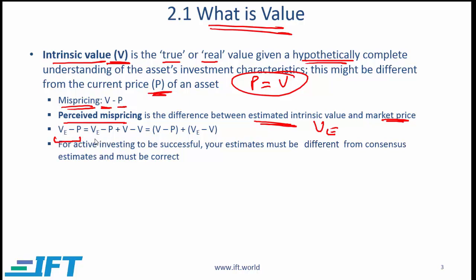If we do a little bit of algebra, we can see that this is equal to the same thing plus V minus V. This expression can be divided into two components: V minus P and VE minus V. This tells us that the perceived mispricing has two components — one is the actual mispricing, which we cannot be completely sure about, and the other is the difference between the value we are estimating and the true value.